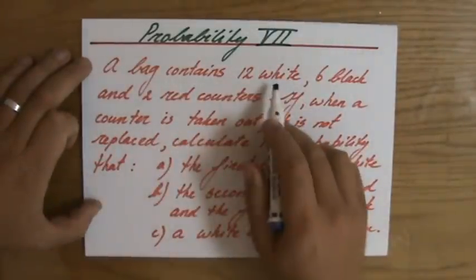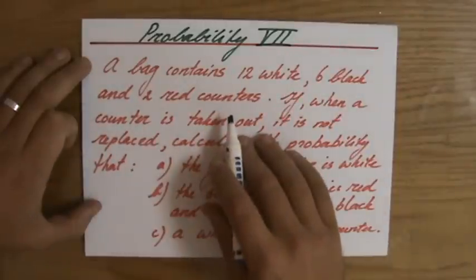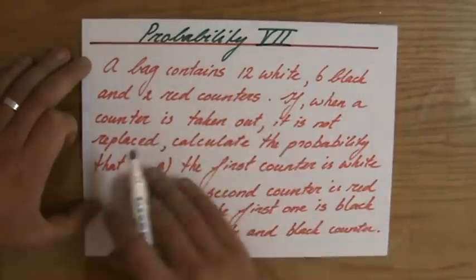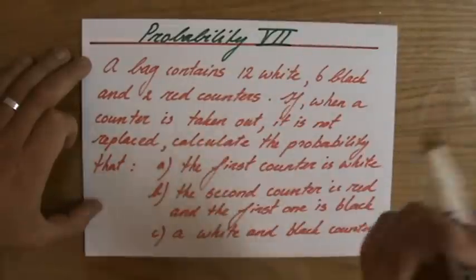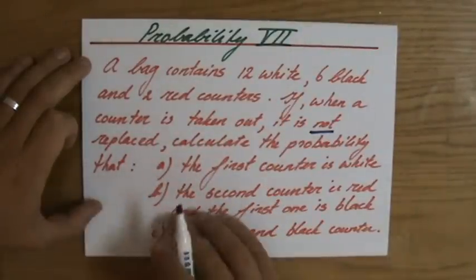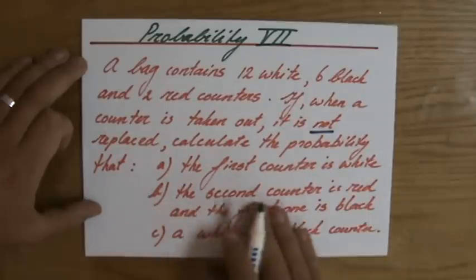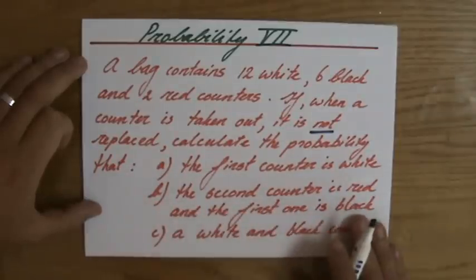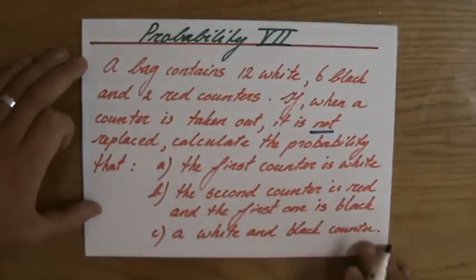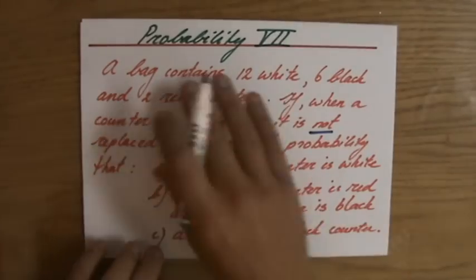A bag contains 12 white, 6 black, and 2 red counters. If, when a counter is taken out, it is not replaced, calculate the probability that: the first counter is white, the second counter is red and the first one is black, a white and a black counter. There's a lot of important information here. I'm going to highlight that. You always do that.